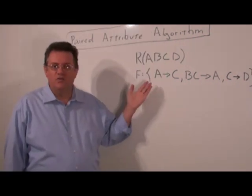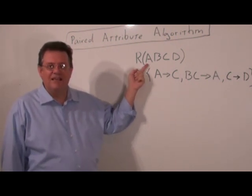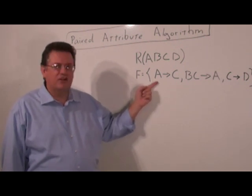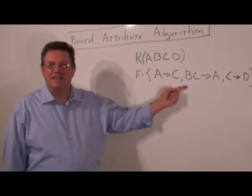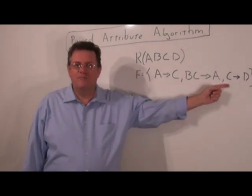On your right you will see a little example here where we have R(A,B,C,D) and a set of functional dependencies where we have A functionally determines C, BC functionally determines A, and C functionally determines D.